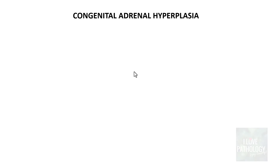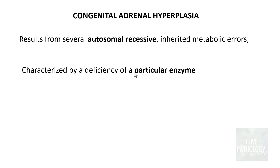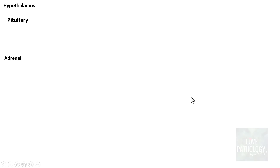Congenital adrenal hyperplasia results from several autosomal recessive inherited metabolic errors, characterized by a deficiency of a particular enzyme involved in the biosynthesis of cortisol. It is very important to note that this disorder is caused by a deficiency of an enzyme involved in cortisol biosynthesis. To understand this, we need to look at the normal synthesis of the various adrenal steroid hormones.